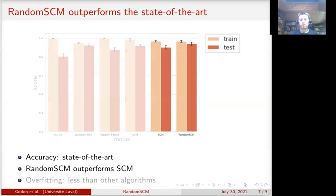Second, we see that the random SCM outperformed the SCM, confirming our hypothesis that there would be benefits to make SCM models more powerful.